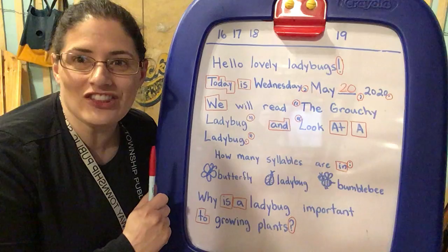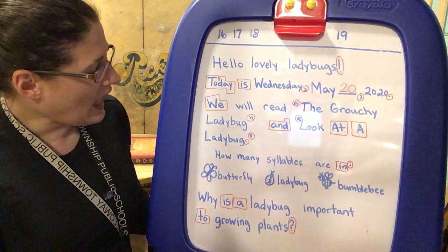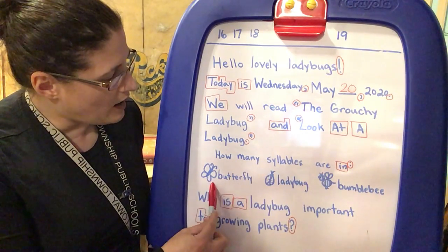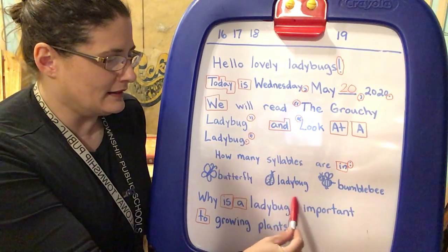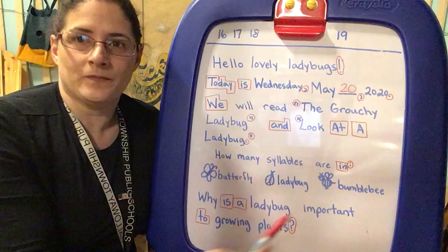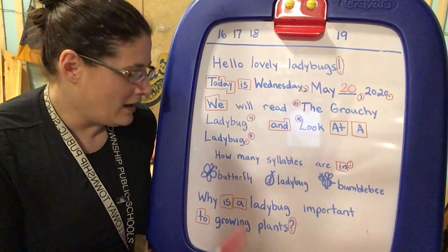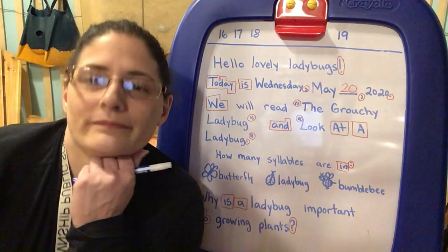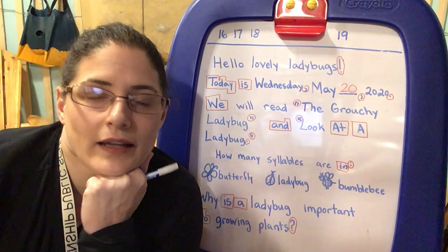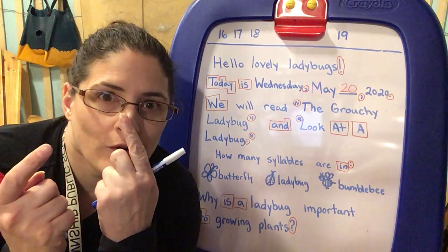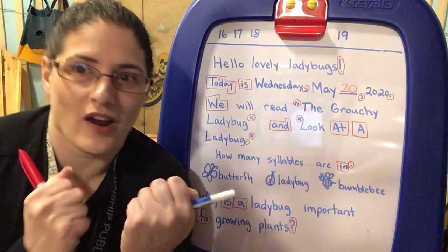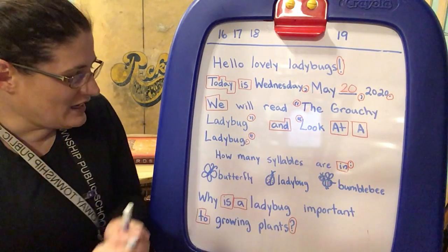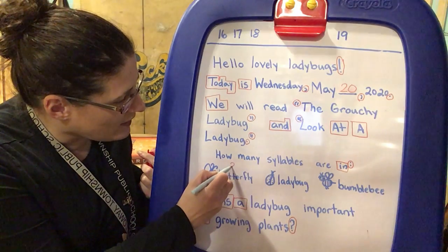We're going to look at two things today about ladybug. How many syllables are in these words? Butterfly, ladybug, bumblebee. We have a song — butterfly, butterfly, butterfly. How many syllables are in that? Let's try: but-ter-fly. Let's try with our fingers: but-ter-fly. How many syllables? Three!